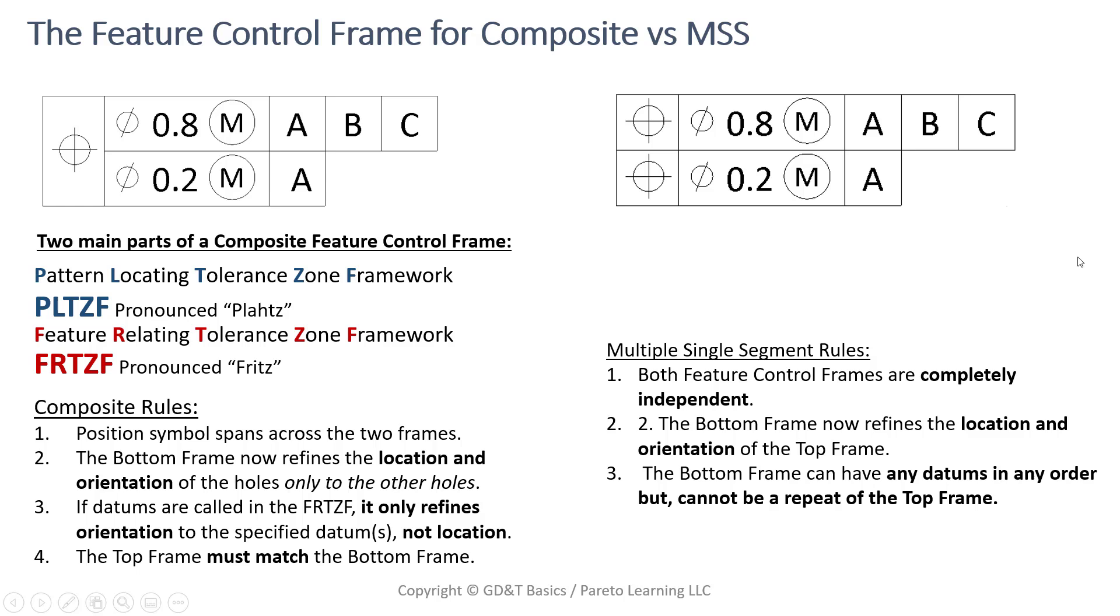So on this slide here, it's the feature control frame and we're going to look at the difference between the composite feature control frame versus the multiple single segment feature control frame. On the left here, on the feature control frame, there is a rule that there's only one position symbol that you see. It spans across both.